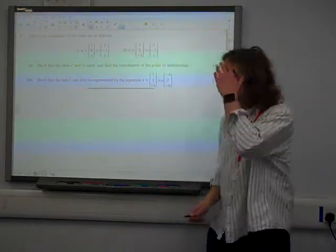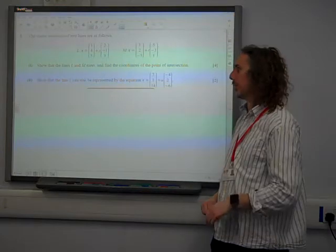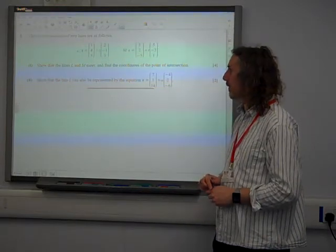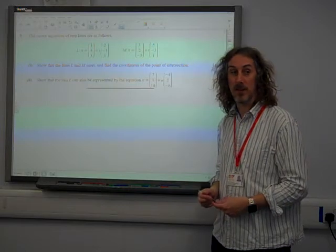Question 5. The vector equations of two lines are as follows. Show that the lines meet and find the coordinates at the point of intersection.